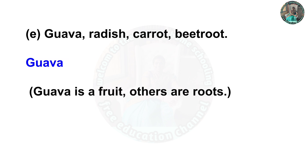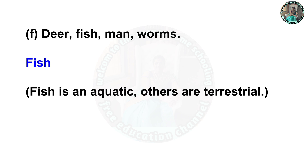E — guava, radish, carrot, beetroot. The odd one out is guava. Guava is a fruit; others are roots. F — deer, fish, man, worms. The odd one out is fish. Reason: fish is aquatic; others are terrestrial.